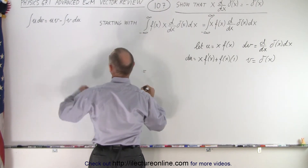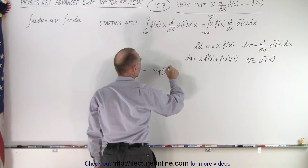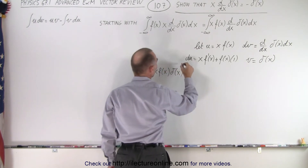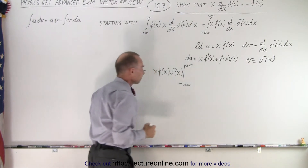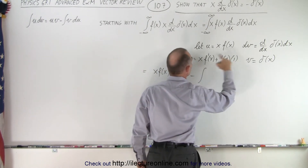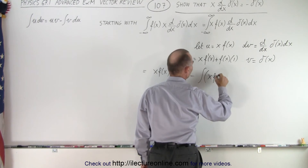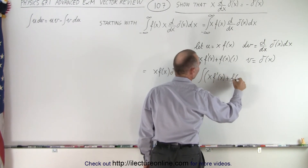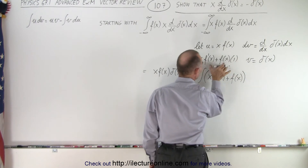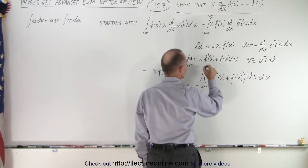Plugging into our equation, this equals u times v. u is x times f of x, multiplied by v, which is delta of x. We evaluate that from minus infinity to infinity. Then we have minus the integral of v du: v is delta of x, and du gives us x times f prime of x plus f of x — since 1 times f of x is just f of x — times delta of x times dx, integrated from minus infinity to infinity.